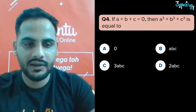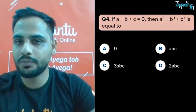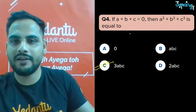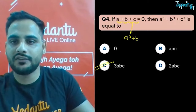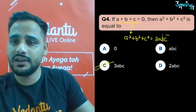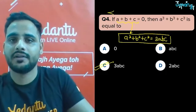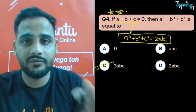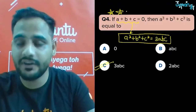Next question: if a+b+c = 0, then a³+b³+c³ equals 3abc. We have already done this. Very important — please remember it. If a four-mark question comes from algebraic identities, this identity will definitely be used.